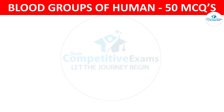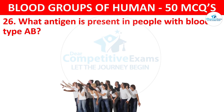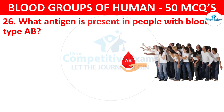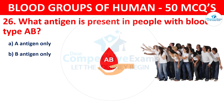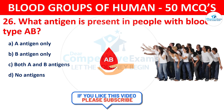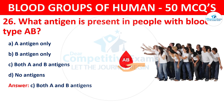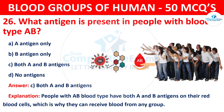Question 26: What antigen is present in people with blood type AB? The correct answer is C, both A and B antigens. People with AB blood type have both A and B antigens on their red blood cells, which is why they can receive blood from any group.